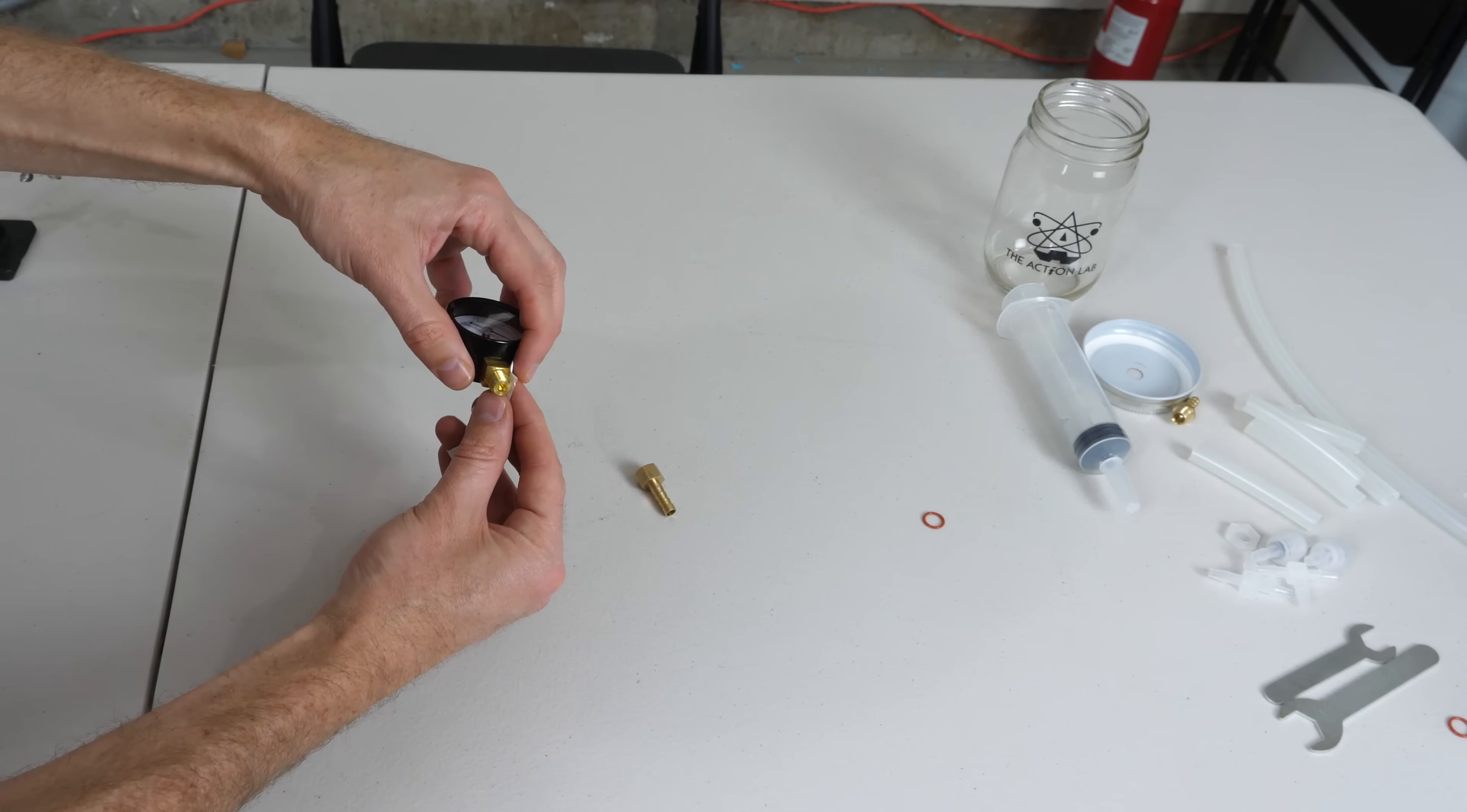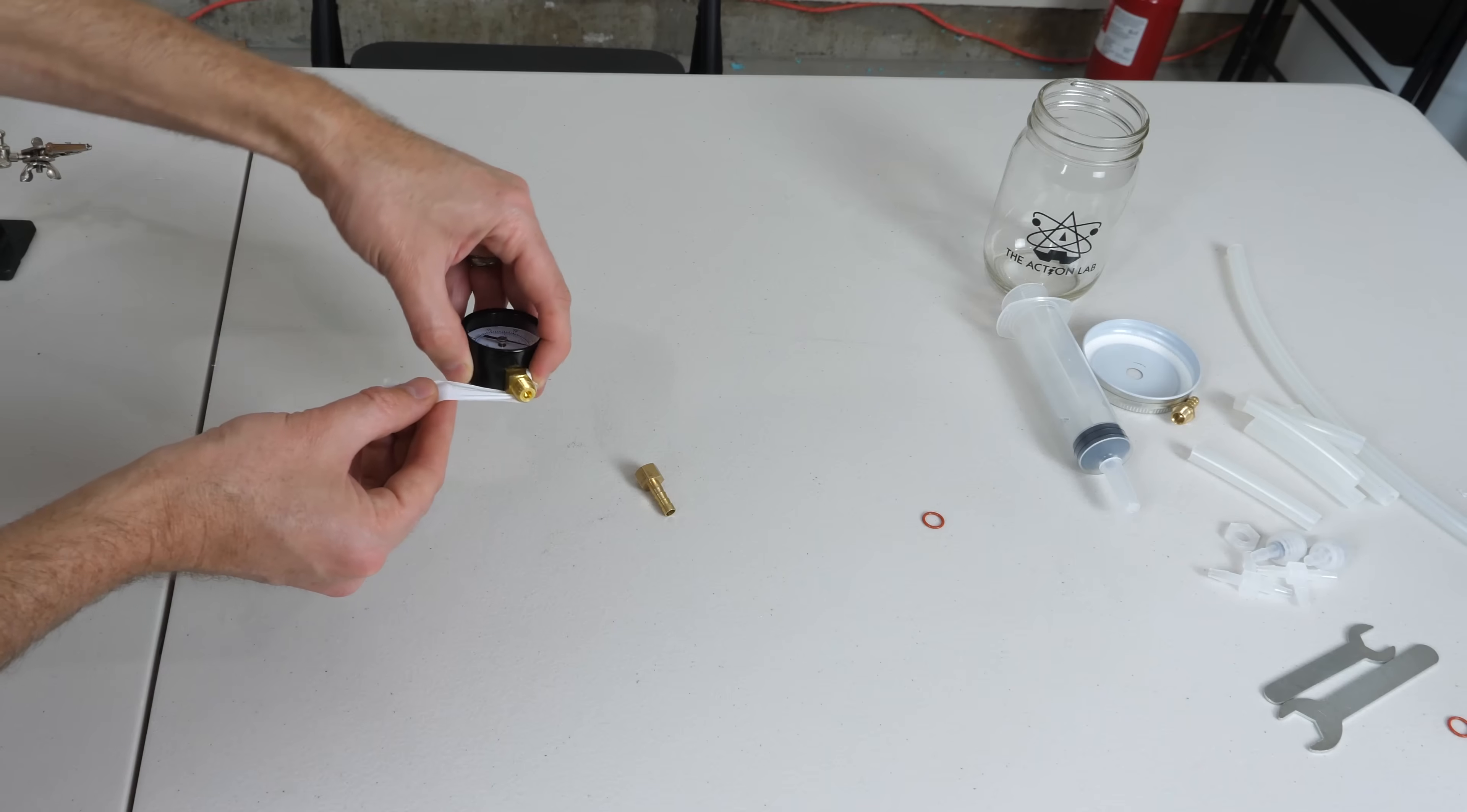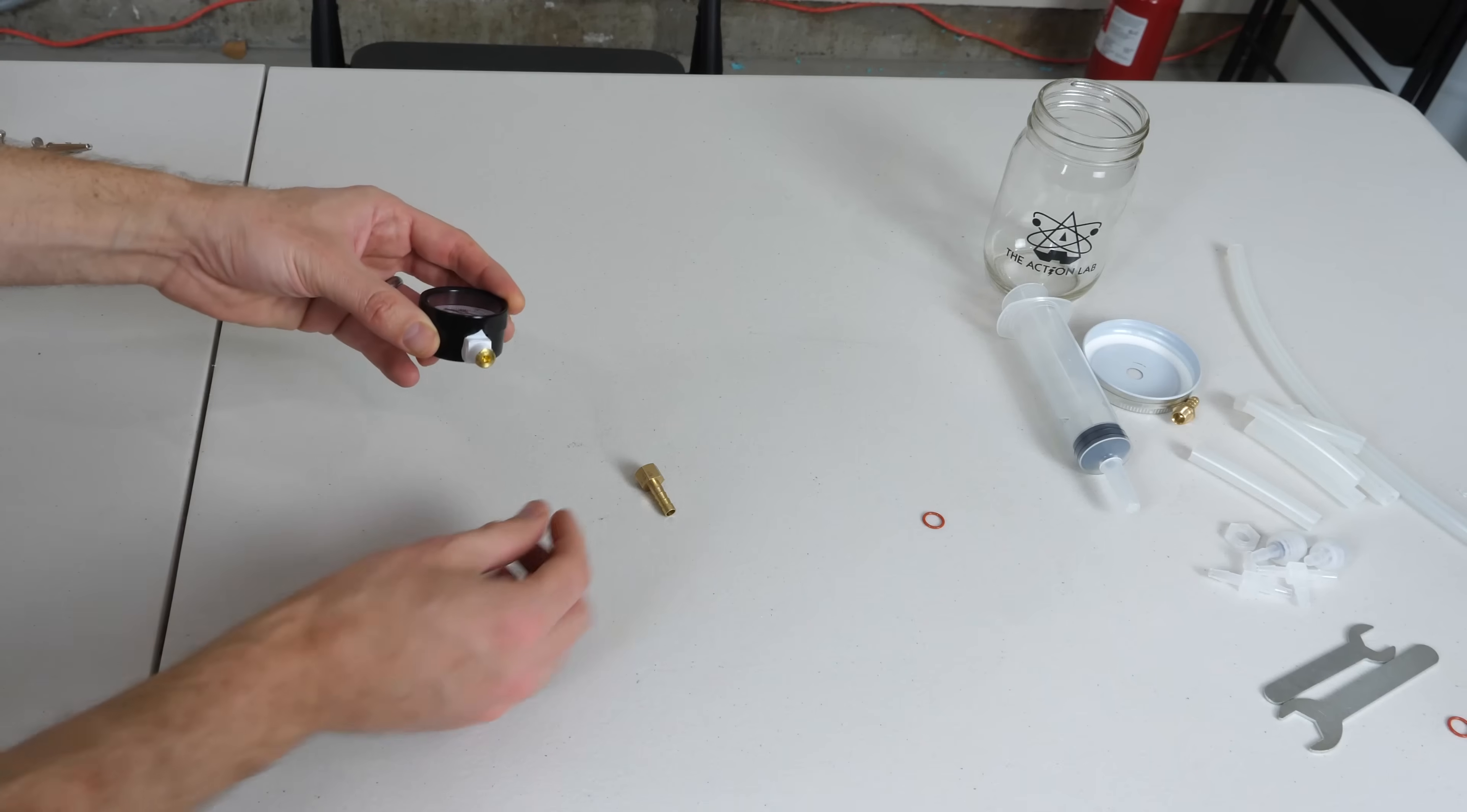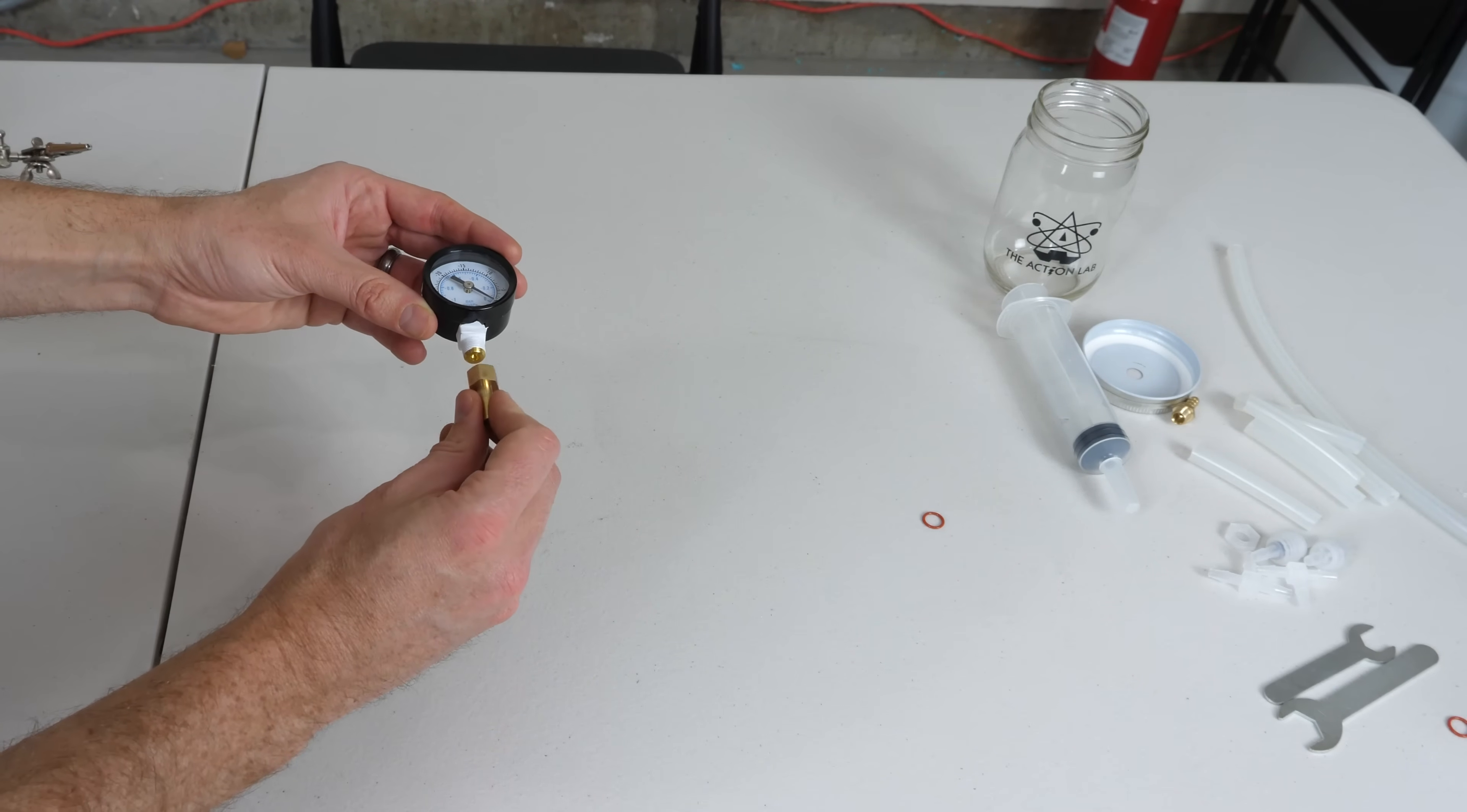So what you do is take your vacuum gauge and wrap your Teflon tape around the threads here. And it's important that you wrap it this way. Wrap it in this direction so that it's flat against the threads. We wrapped it this way so that when we thread this on, it doesn't unthread it when we turn it.